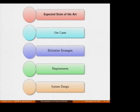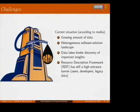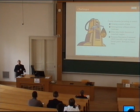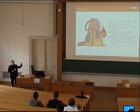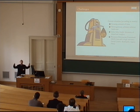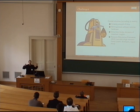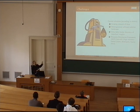Our requirements elicitation had five phases. The first phase was discussing the expected state of the art. There's a big fuss about data being the new oil — I think that's true. According to media, we have four big problems with data. The first is the growing amount of data. The second is a heterogeneous software solution landscape — enterprises have one tool for HTML, another for Twitter, SAP CRM systems, and so on.